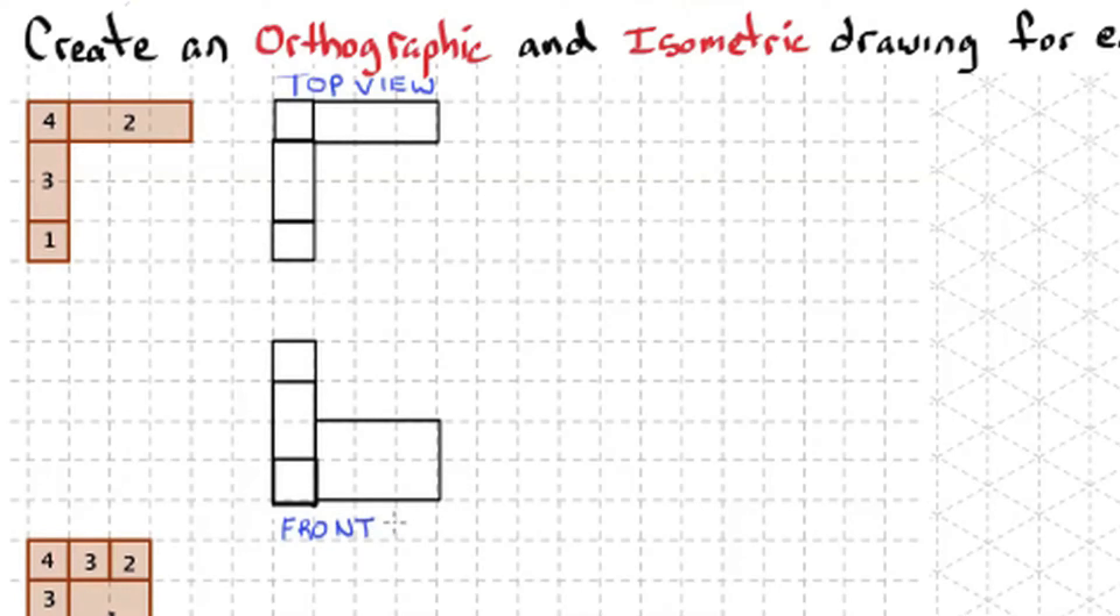Now I need to do my right side view. So I should see a 1x2 block and another 1x2 block on top of it. And then there's a 3x2 block and then a 1x1. And that's my right side view.